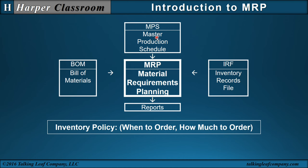We'll start with describing the inputs to the MRP: the master production schedule, the bill of materials, and the inventory records file. Then we'll cover the mechanics of MRP and how it generates reports. One primary report is the inventory policy, which is when to order and how much to order the items in the MRP.